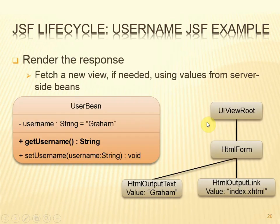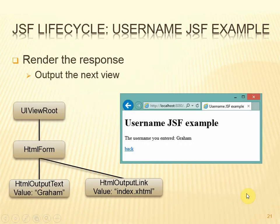The model has been updated, so now we're ready to render the response. This next part requires another view — page2.xhtml. We're going to build the UI component tree for the new view and populate the output text with a value from the bean. The controller servlet will call getUserName, which takes the value stored in the field and puts it into the output text object. There's also an element with the value index.xhtml, which is the link to the next page should the hyperlink be followed. Having built the tree, we're ready to output the view — the output text has taken its value from the bean, and the href for the hyperlink has taken its value from there as well.